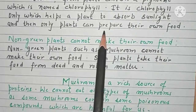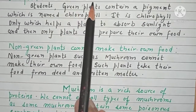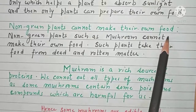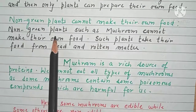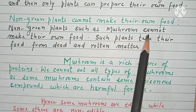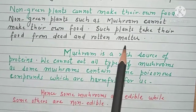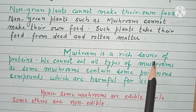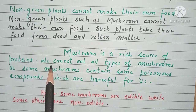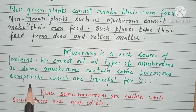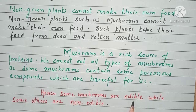This green colouring pigment chlorophyll is present in only green plants. Non-green plants cannot make their own food — so how are they taking their food? Non-green plants such as mushroom take their food from dead and rotten matter. Mushroom is a rich source of proteins. We cannot eat all types of mushrooms, as some mushrooms contain poisonous compounds which are harmful for us. So some mushrooms are edible while some others are non-edible.